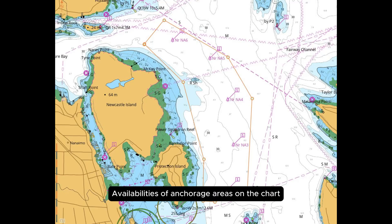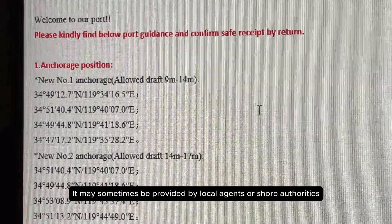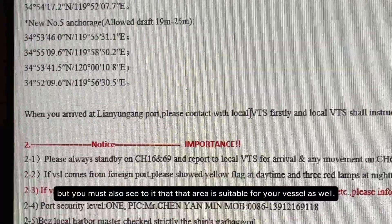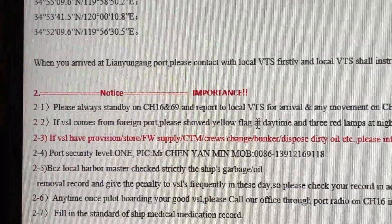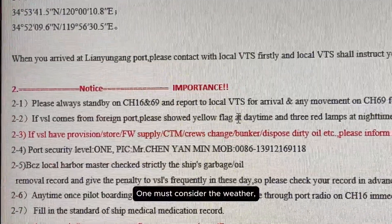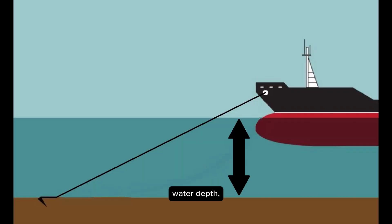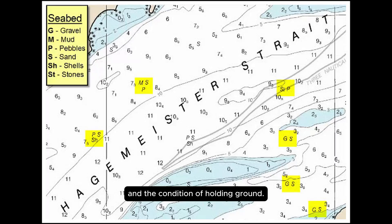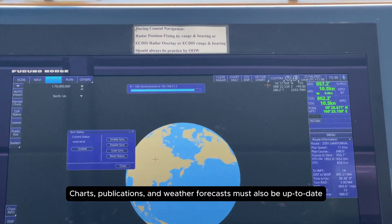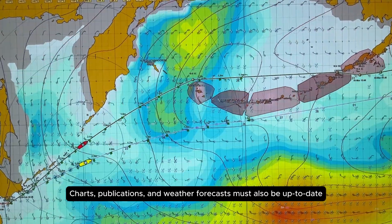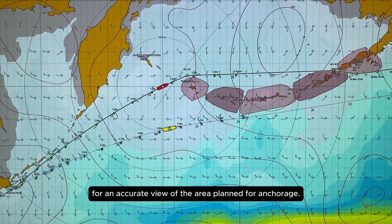Availability of anchorage areas on the chart varies depending on vessel types. It may sometimes be provided by local agents or shore authorities, but you must also see to it that the area is suitable for your vessel. One must consider the weather, closeness to shoreline, traffic density, water depth, and the condition of holding ground. Charts, publications, and weather forecasts must also be up to date for an accurate view of the area planned for anchorage.